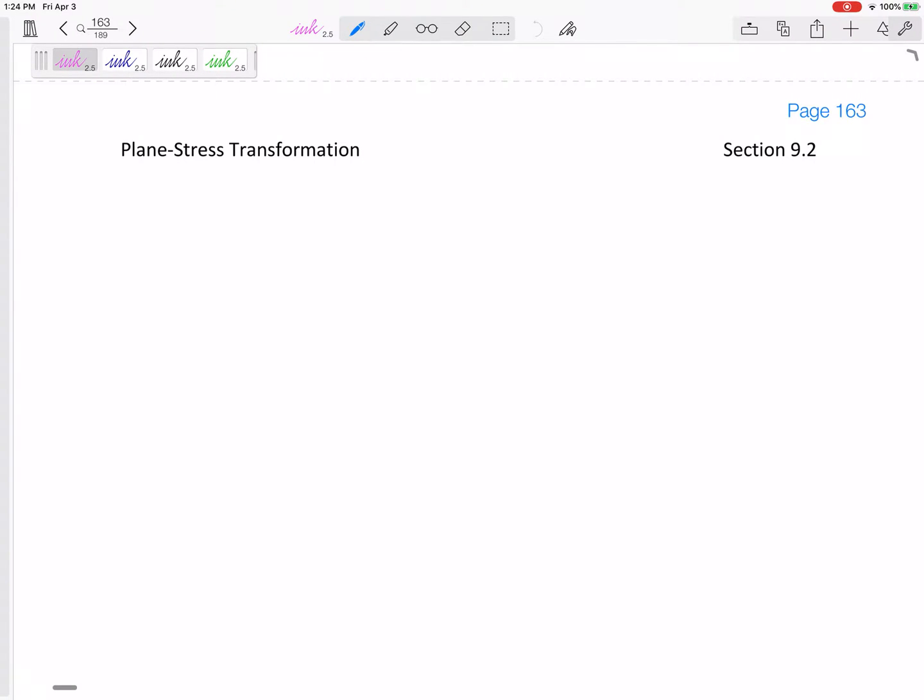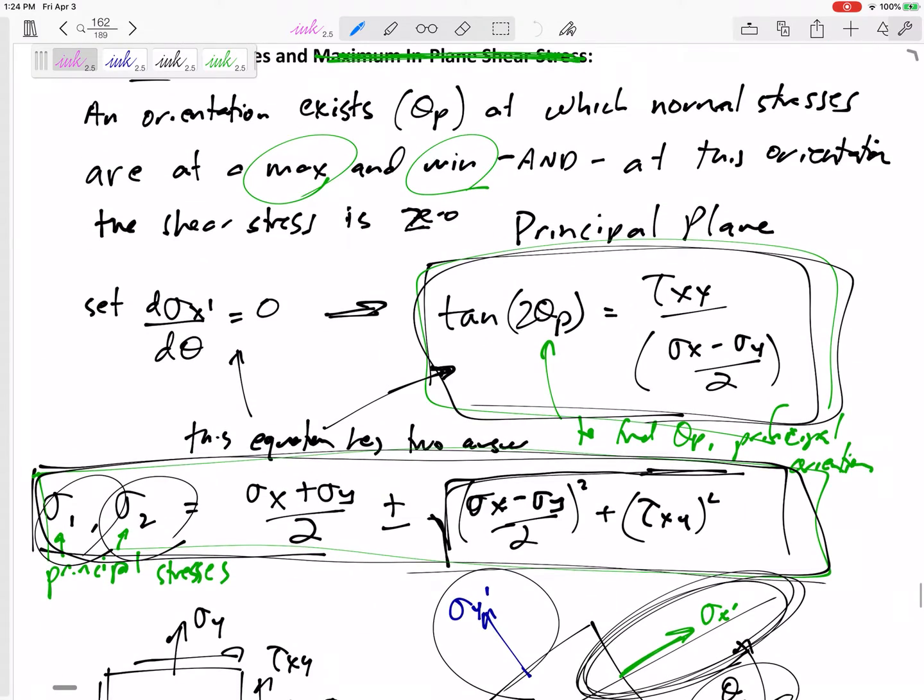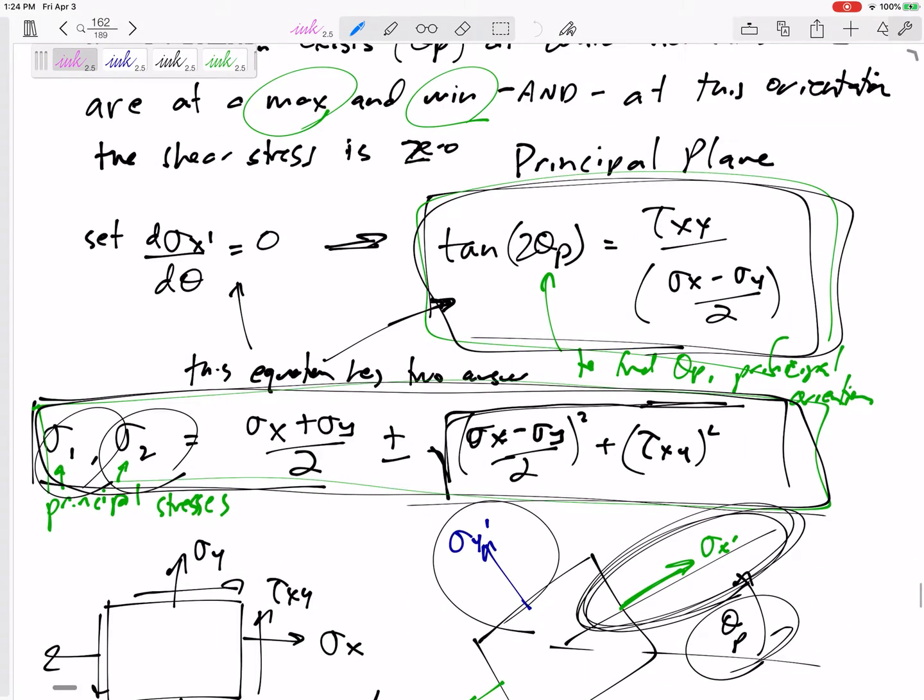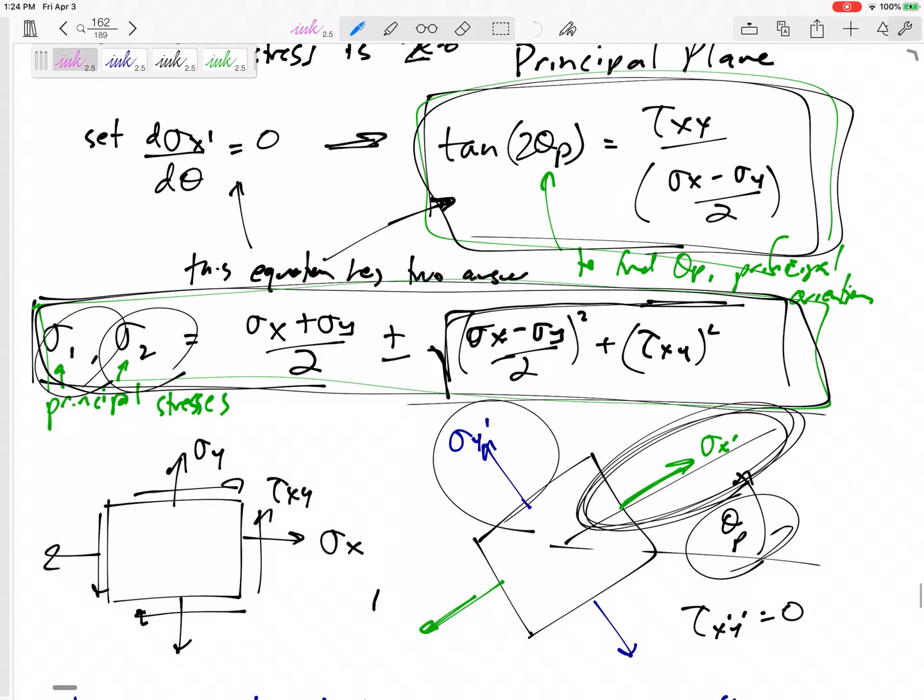Alright, so last class we got some new equations. This is for the principal stresses—the maximum normal stresses that we're ever going to have and the minimum normal stresses at any orientation. The orientation that sees these maximum and minimum normal stresses is the principal orientation, the principal plane, it's theta p.